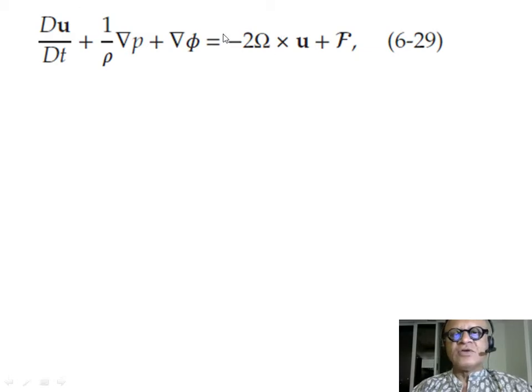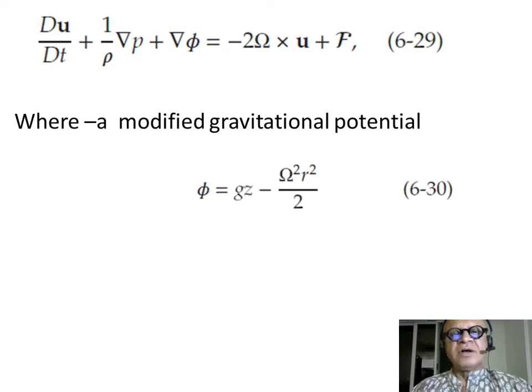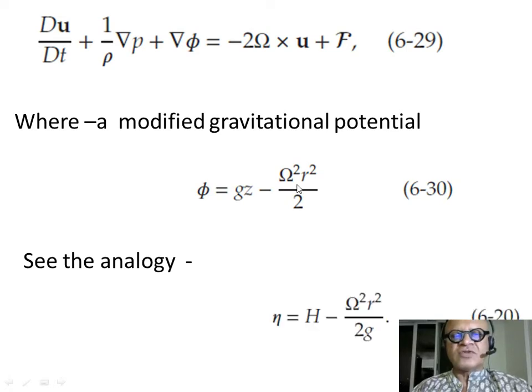The rest looks pretty much the same. The modified gravitational potential is of course gz minus omega squared r squared over 2. This is our centrifugal force term from the rotation.